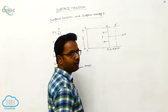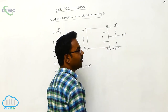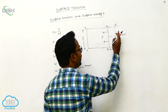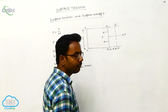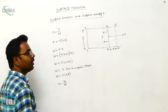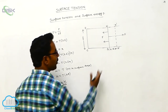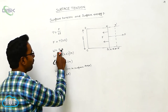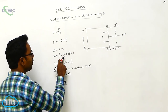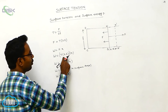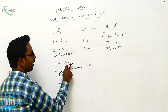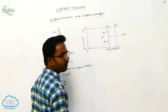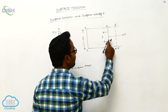The minimum force required for us to move the wire to the right side and increase the surface area is again F. Work done is equal to force into displacement: W = F × X. Substituting, W = T × 2L × X, so W = T × 2LX. Here, 2LX is the increasing area of the surface film — the surface film has increased by area 2LX.